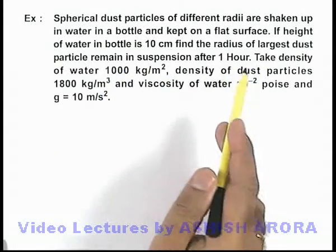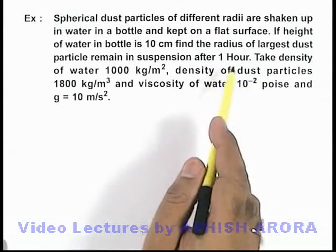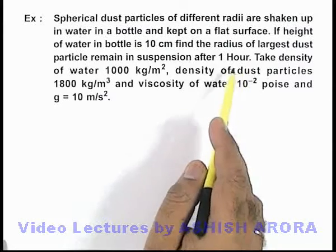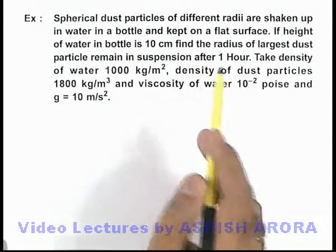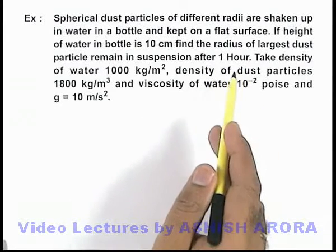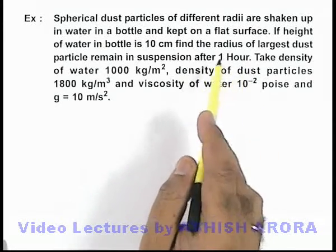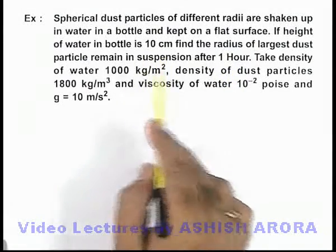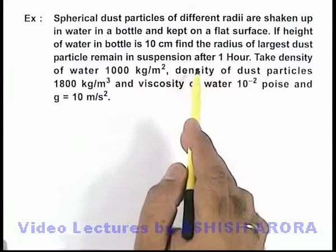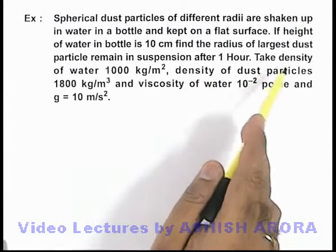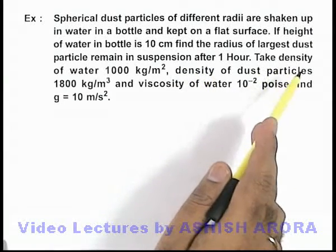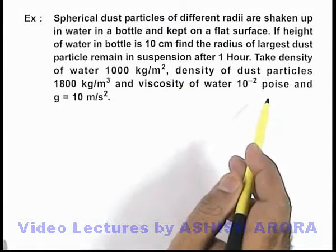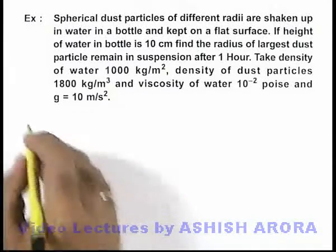That means the majority of dust particles will settle down at the bottom in 1 hour. Those which are having a terminal velocity that is very low — such that even in 1 hour they will not be able to cover a distance of 10 centimeters — those are the particles we are required to find. We are given data about the density of water, density of dust particle, and viscosity.